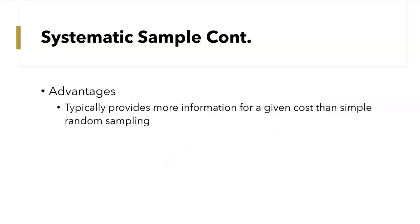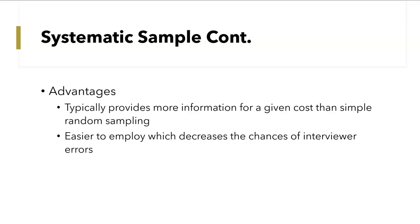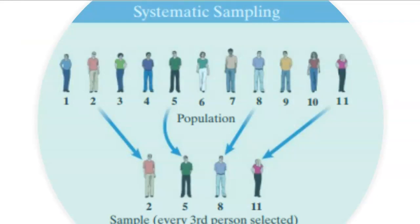Some advantages of systematic sampling: it typically provides more information for a given cost than simple random sampling, and it's easier to employ, which decreases the chances of interviewer errors. Here is a graphic summarizing systematic sampling. You have your population and sample every third person, for instance. You randomly select the starting number — in this case they started with 2 — then took every third person: 2, 5, 8, 11, and you keep doing that until you get the sample size you want.